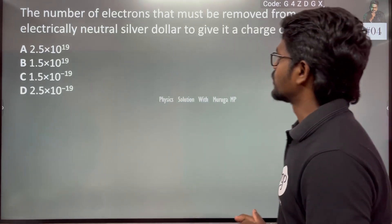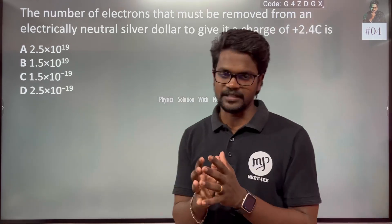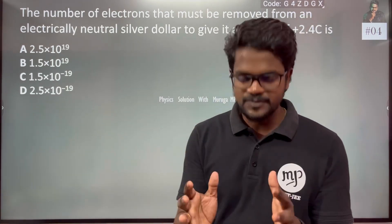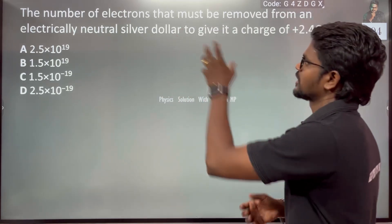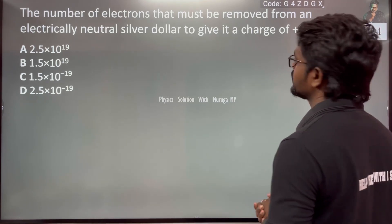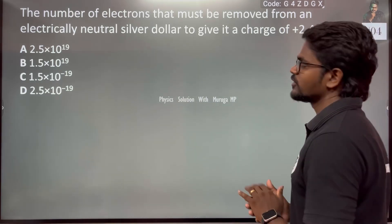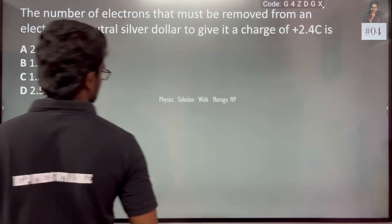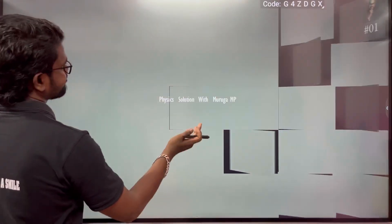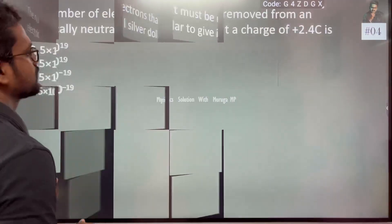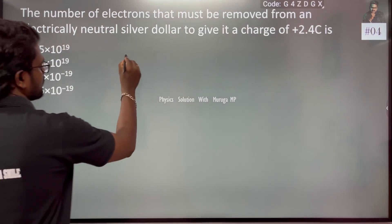The number of electrons that must be removed from an electrically neutral silver dollar to give it a charge of 2.4 coulomb. We say that there is an object, the object is electrically neutral.